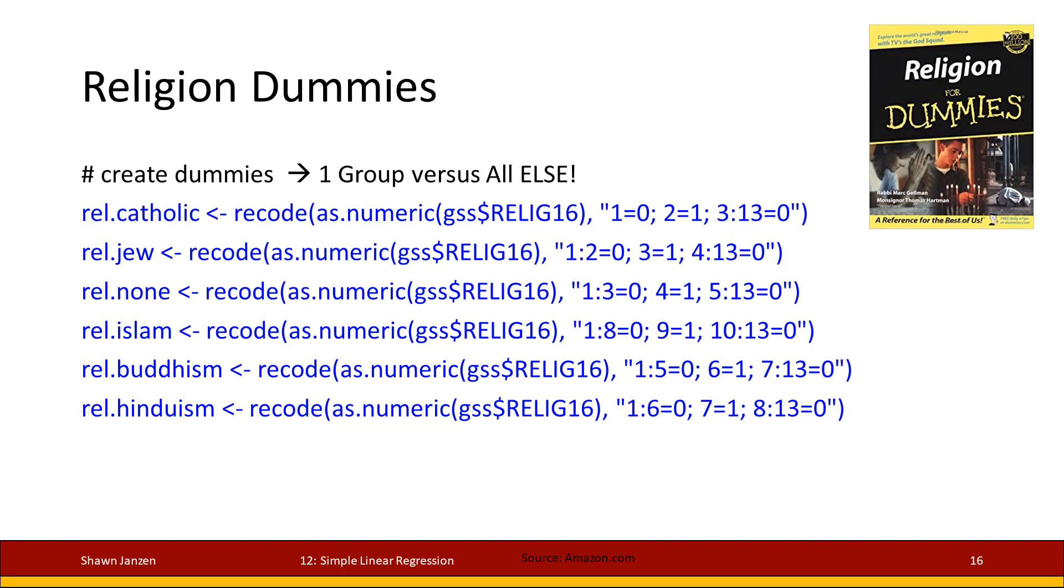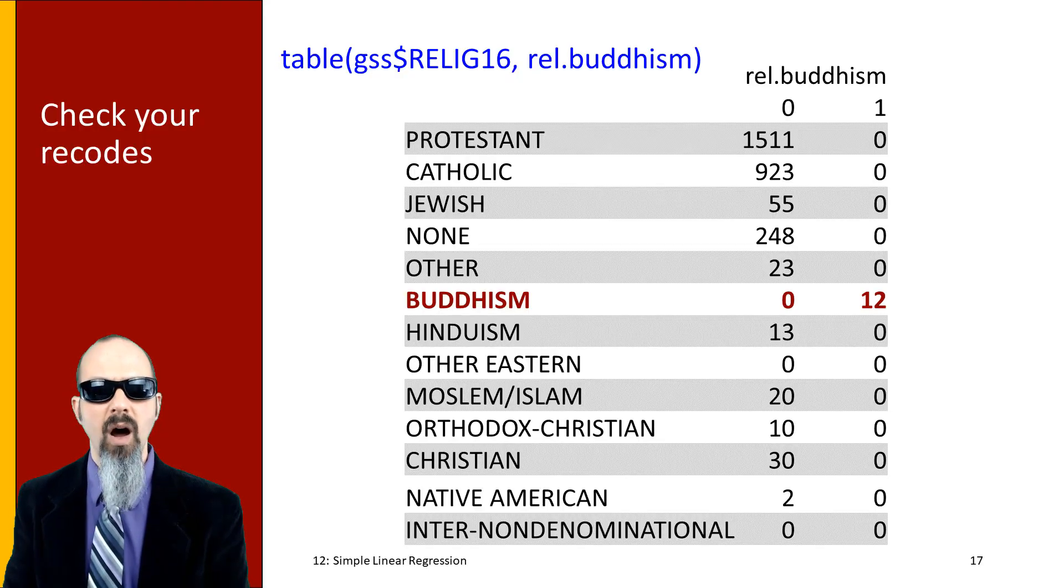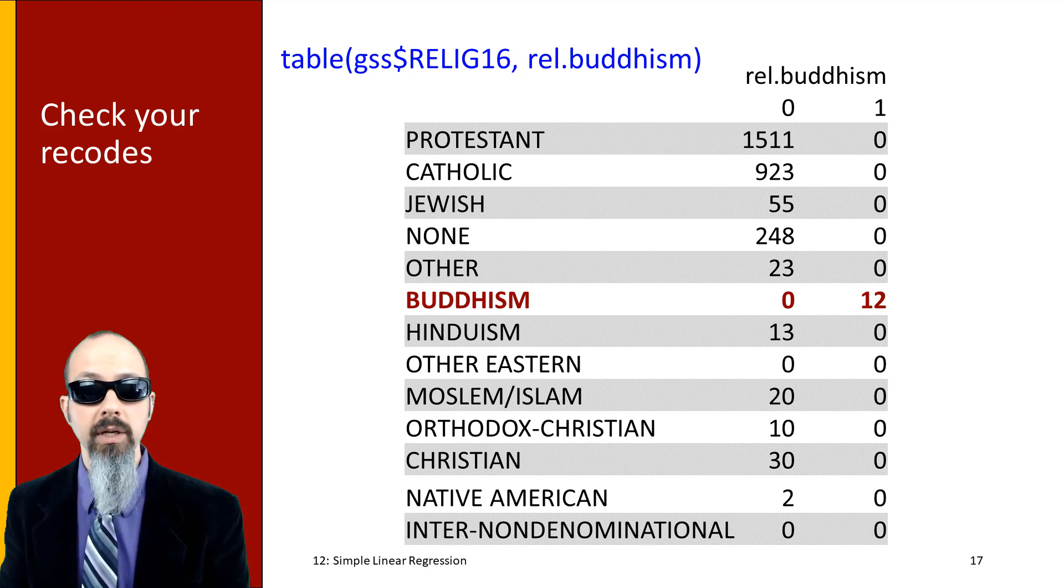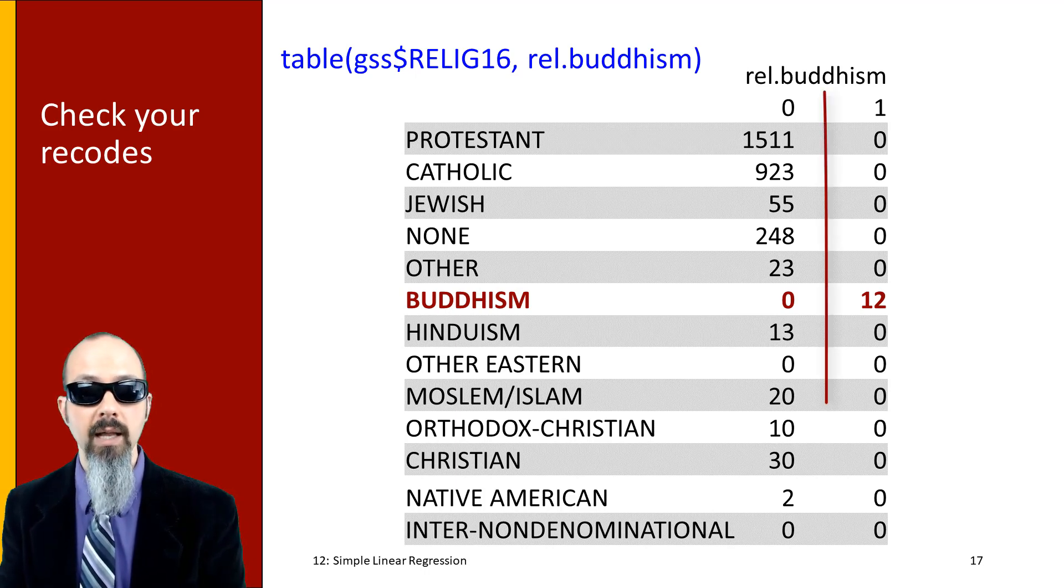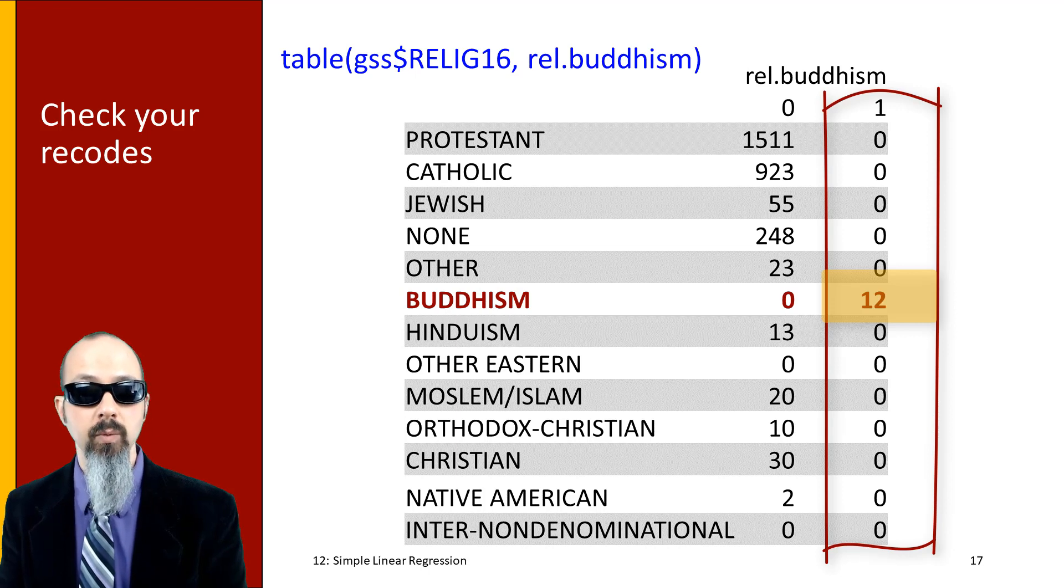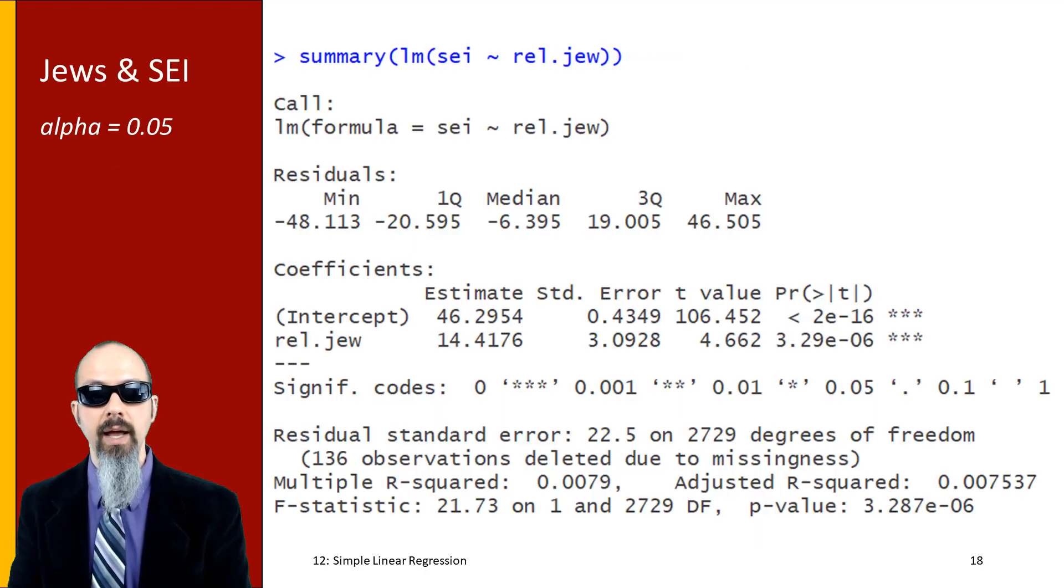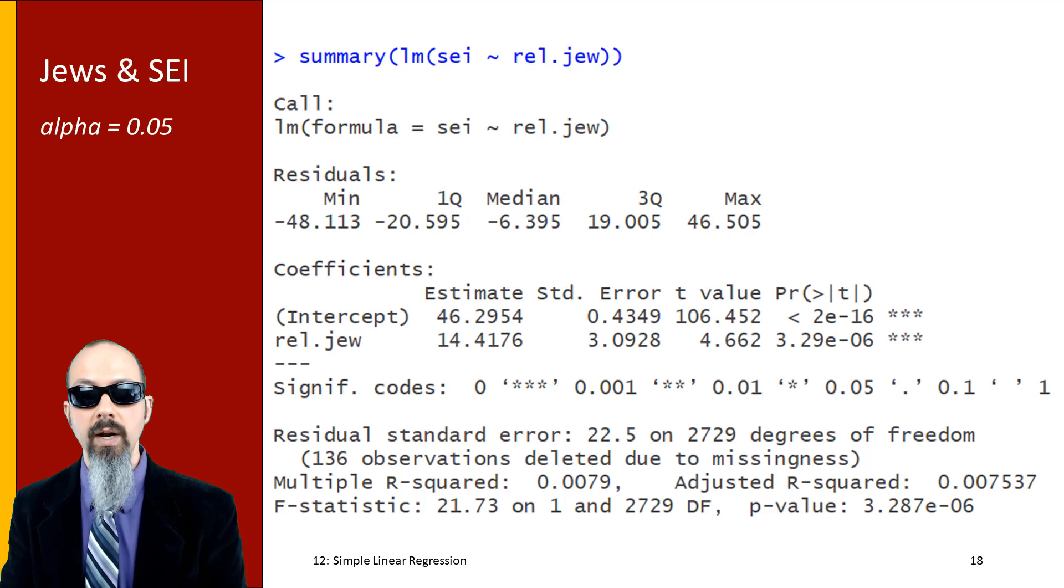When I hit the level code for that particular religion, I code it as 1, all other values become 0. It's always good to double check your recodes. On the screen at the moment I'm just showing you one particular recoding check - we're checking Buddhism compared to all other religions. It's now zero-one. At the top, if I look at the 1 column, I should only have counts in the Buddhism religion. All of the others should be coded onto the zero, as they are.